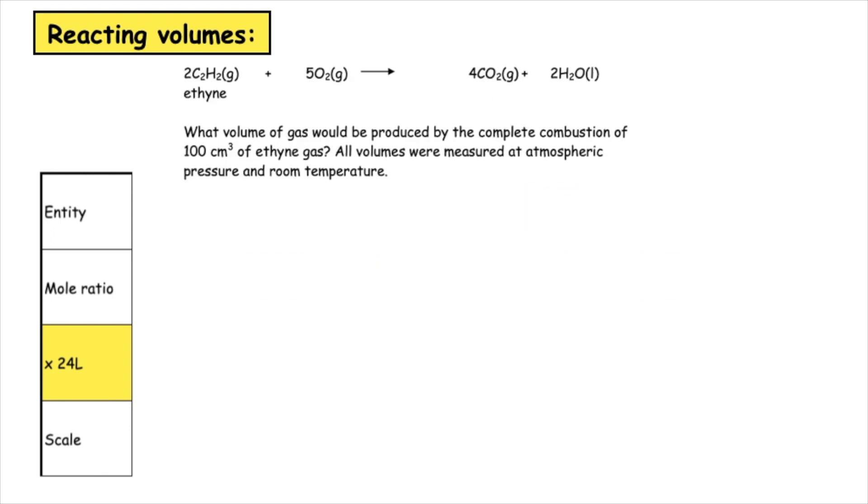This next example asks us what volume of gas would be produced by the complete combustion of 100 centimetres cubed of ethine gas. All volumes were measured at atmospheric pressure and room temperature. So we have to pick out our entities. Ethine has the formula C2H2 and the only gas product we have on the product side is carbon dioxide which has the formula CO2.